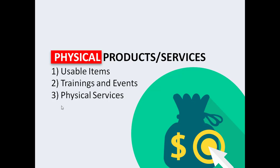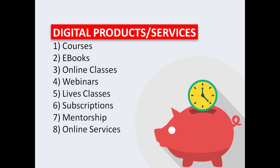Whatever it is — be it hair styling, whatever you do physically — you can market it online. Digital products include courses, ebooks, or online classes. People sell courses on particular digital aspects, some in video format, some in form of online classes, probably a closed WhatsApp group or a closed Facebook group.